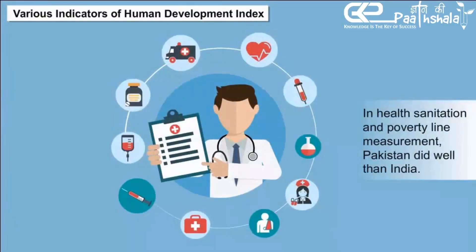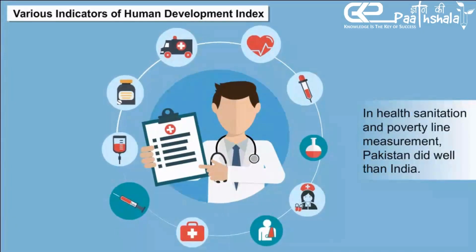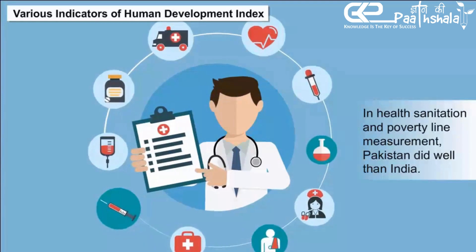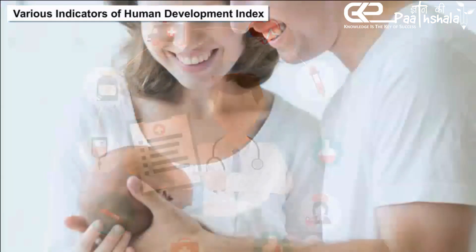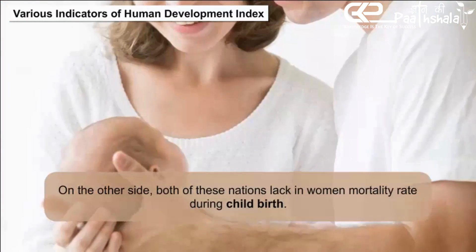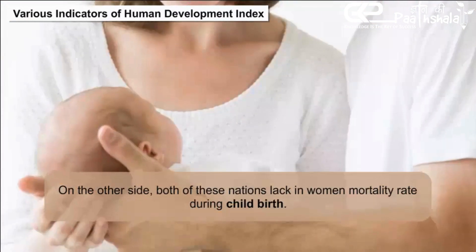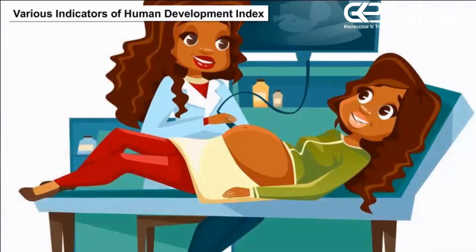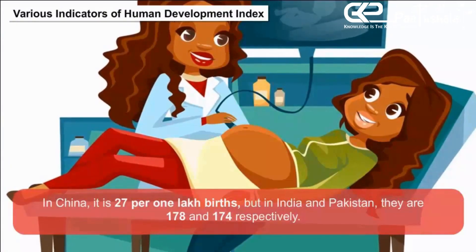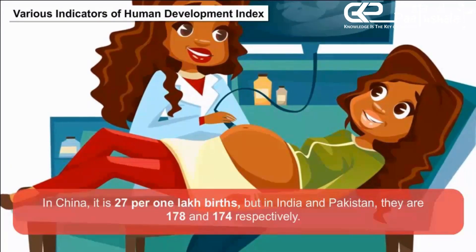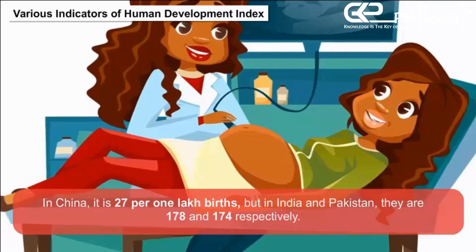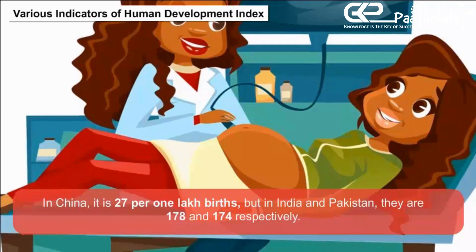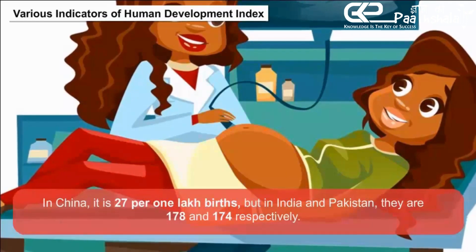In health, sanitation, and poverty line measurement, Pakistan performed better than India. On the other side, both nations lack in women's mortality rate during childbirth. In China, it is 27 per 1 lakh births, but in India and Pakistan they are 178 and 174 respectively.